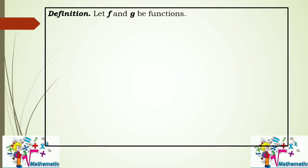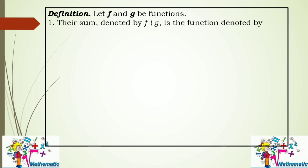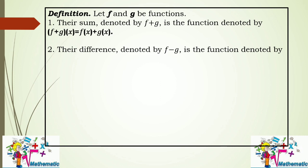Let us define some terms and rules. Let f and g be functions. Number one: their sum, denoted by f plus g, is the function defined by f plus g of x equals f of x plus g of x. Number two: their difference, denoted by f minus g of x, equals f of x minus g of x.